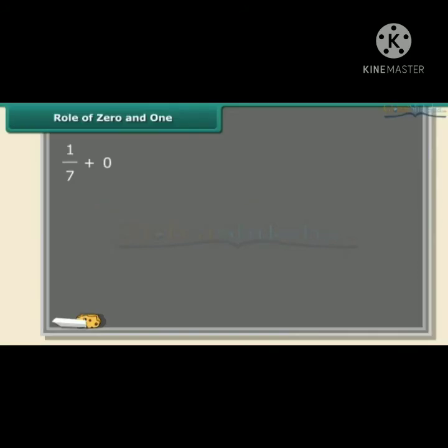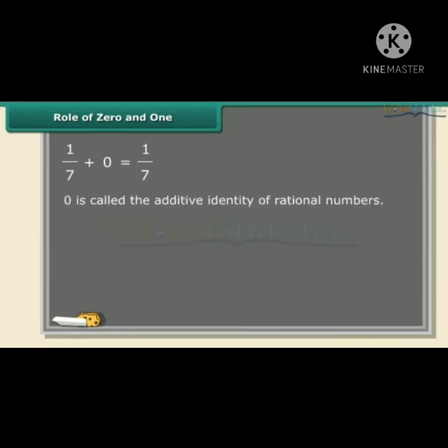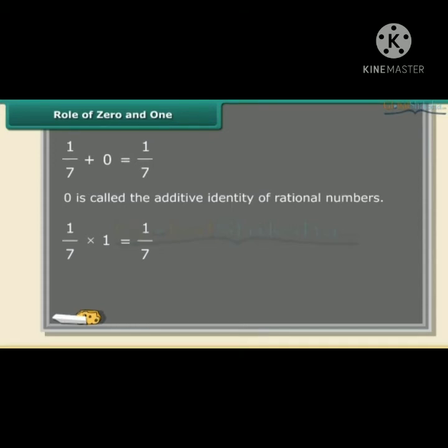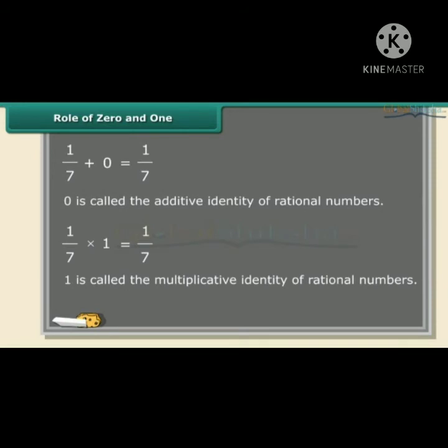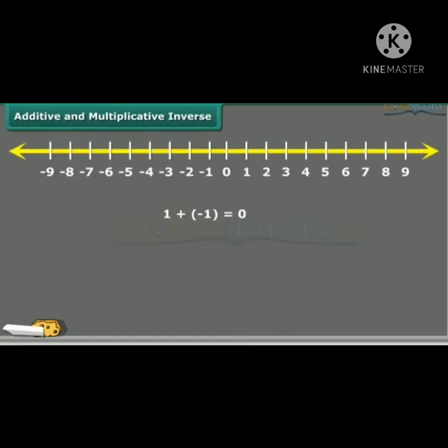Here we have added 0 to a rational number. What did you notice? When we add 0 to a rational number, the sum is always the same rational number. For this reason, 0 is called the additive identity of rational numbers.